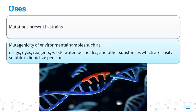The uses of the Ames test: we can detect possible mutations in different strains of bacteria. It is a less expensive technique, takes very little time, and is easy to understand. We can check the mutagenicity of many environmental samples such as drugs, dyes, reagents, wastewaters, and pesticides. However, the substances must be soluble in liquid suspension, as we are incubating a liquid suspension.